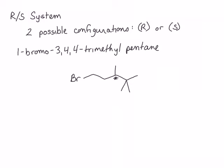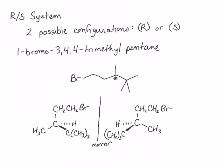Now let's draw both mirror images of this chiral center in perspective to make it easier to see. Here are the two enantiomers of 1-bromo-3,4,4-trimethylpentane. Now we will assign priorities to each of the groups on each of the chiral center enantiomers.